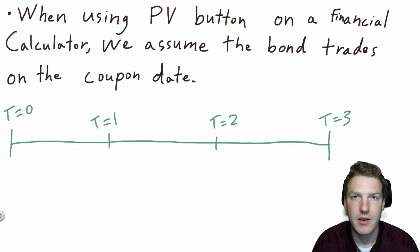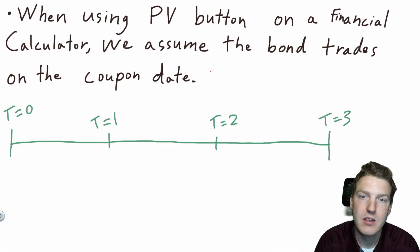When we use the present value button on a financial calculator, we're making the assumption that a bond trades on the coupon date.